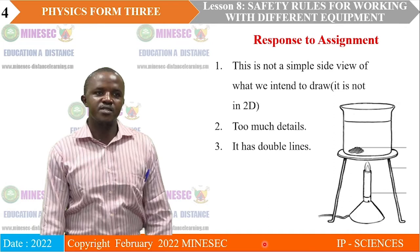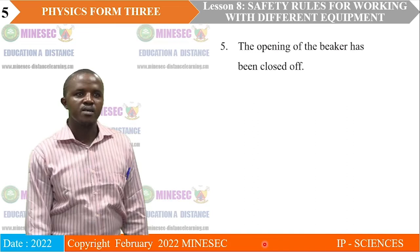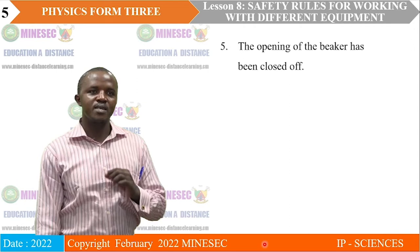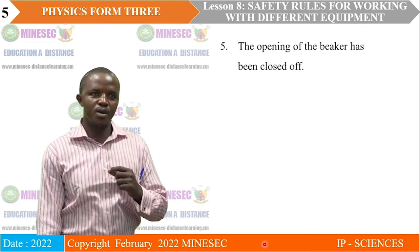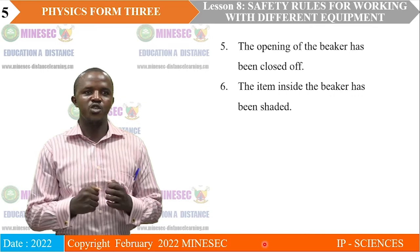The issue with the lines is that they are sketchy. Take note of what is happening at the feet of the tripod. Also, the opening of the beaker has been closed off. We learned in the last lesson that if you are drawing a scientific diagram, the opening of the beaker is not supposed to be closed off, but that is not the case with the diagram we just saw. Furthermore, the item inside the beaker is shaded, and from what we learned in the last lesson, you were told not to shade — so the shading is a problem.